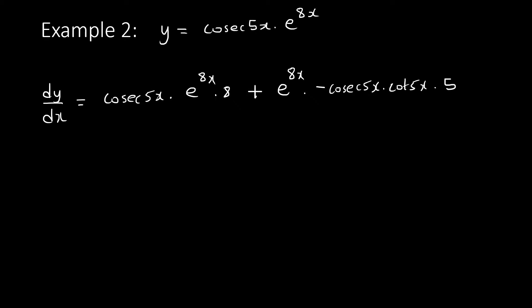Remember it's cosec(5x) cot(5x), then you derive also 5x, we get 5. That's your answer. Remember don't simplify, leave it there. This one was only two marks because it didn't do much.